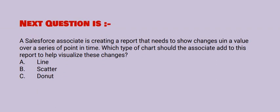Next question: a Salesforce associate is creating a report that needs to show changes in a value over a series of points in time. Which type of chart should the associate add to this report to help visualize these changes? Option A: line. Option B: scatter. Option C: donut. The correct option is option A.